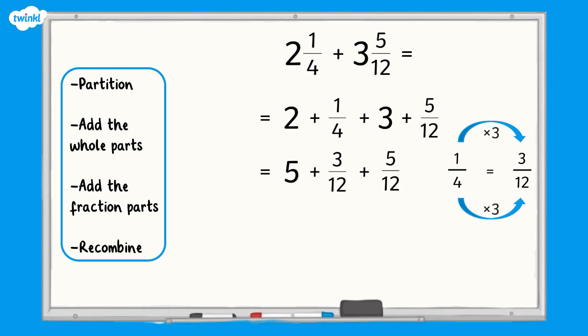So we can replace this in the calculation. Now we can add the fraction parts. Three-twelfths add five-twelfths equals eight-twelfths. Eight-twelfths can be simplified to two-thirds. Finally we recombine and our final answer is five and two-thirds. So two and one-quarter add three and five-twelfths equals five and two-thirds.